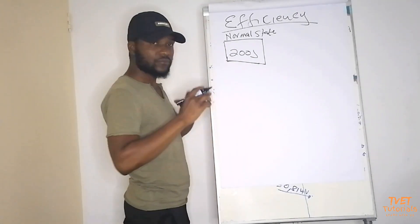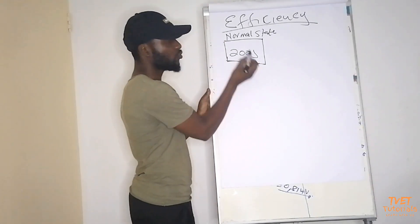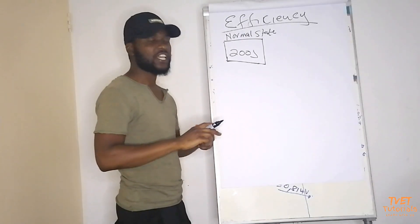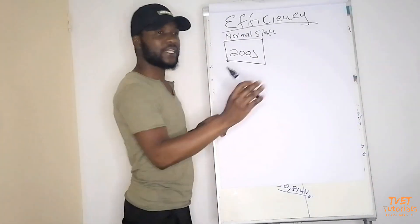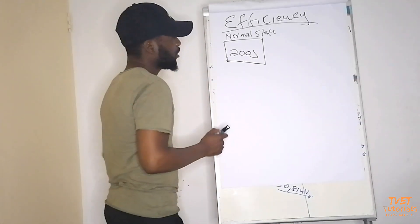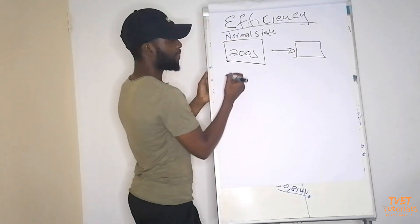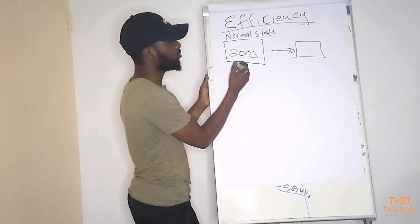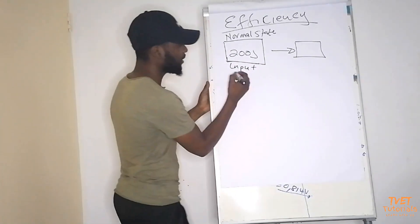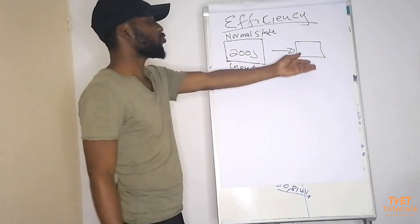On your normal state — meaning you are not sick, you are well, 100% okay — the energy that you own is 200 joules. This is your total energy. If you have to give out all your energy, this is what you will give: 200 joules. This energy that you own we call it the input energy.